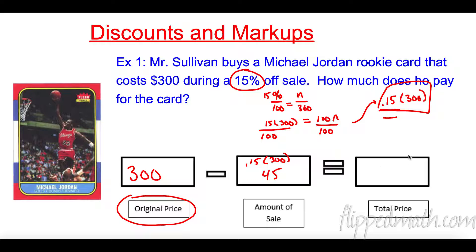So the total price is going to be 300 minus 45, which is 255 — all for a little Michael Jordan basketball card. Crazy.